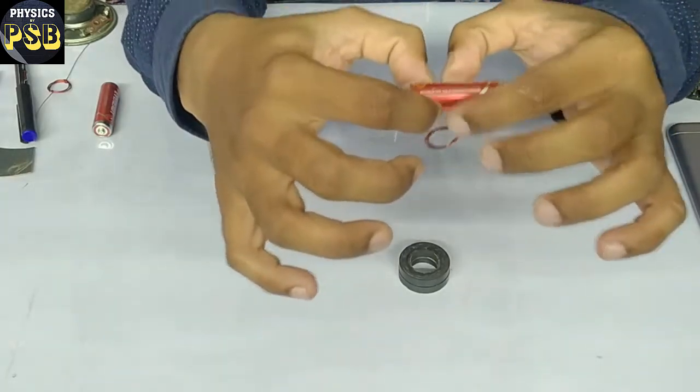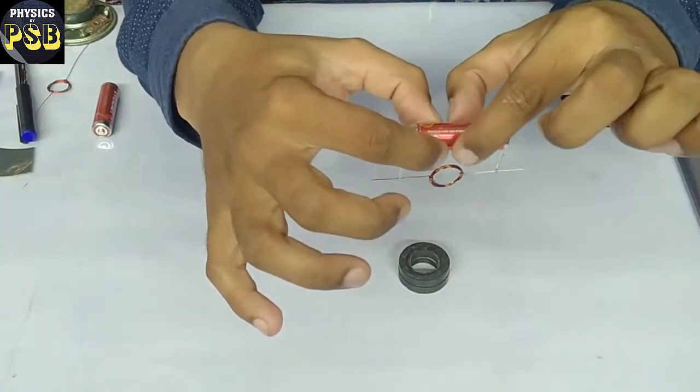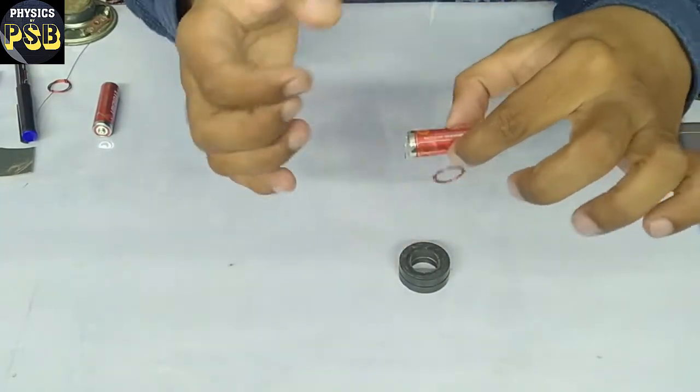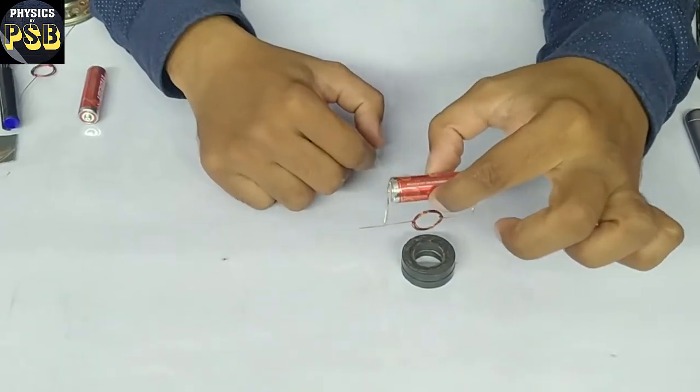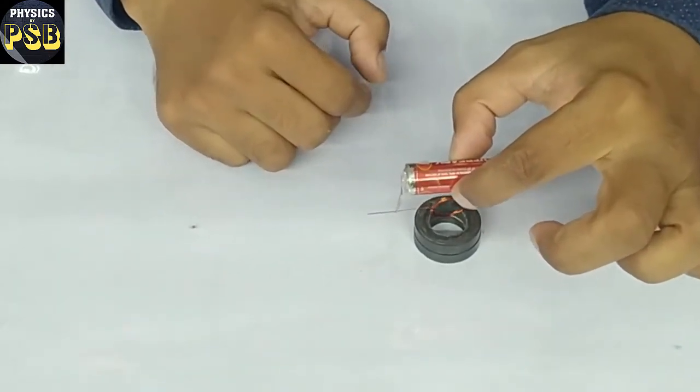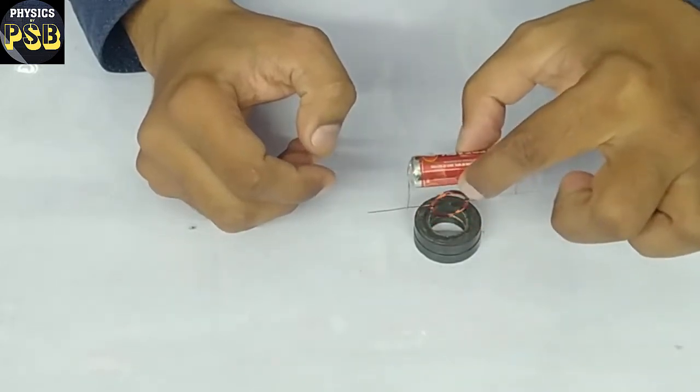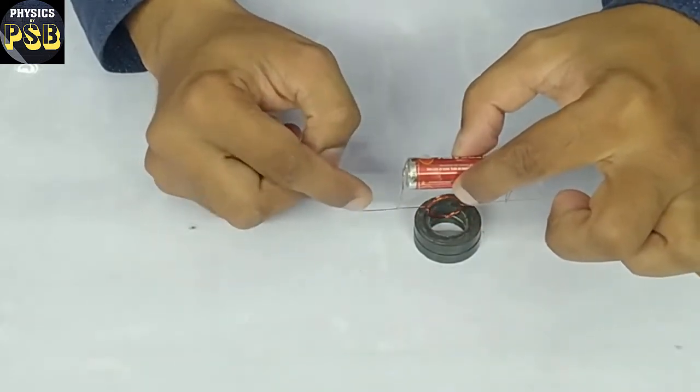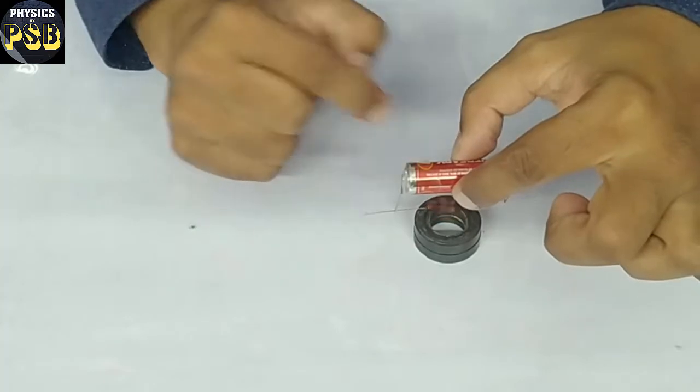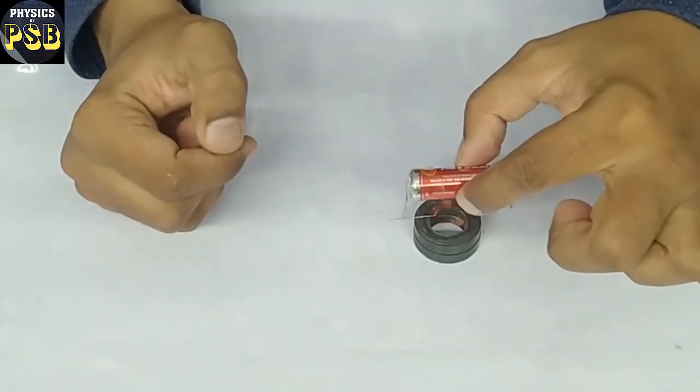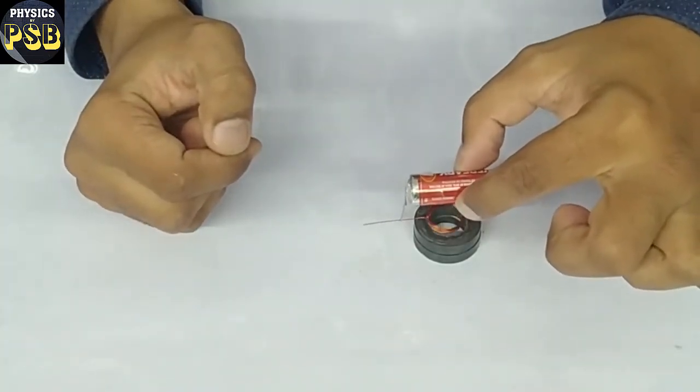Now here is the motor which is simpler than the previous one. Now bring it near to the magnet. If it doesn't rotate just give a gentle push. You can see the motor has started rotating.